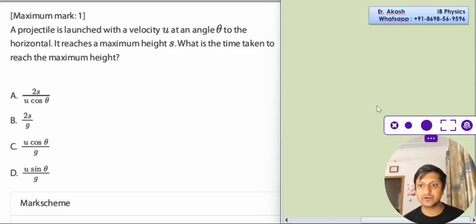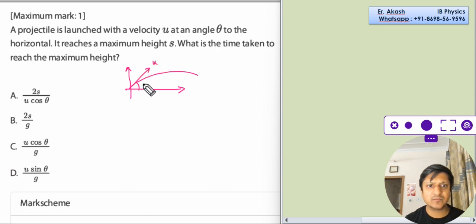We have a new question. The question says a projectile is launched with a velocity u at an angle theta. We will draw along with the reading of the question. The projectile is launched like this with velocity u at angle theta to the horizontal.